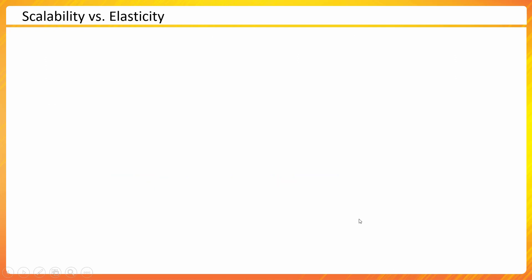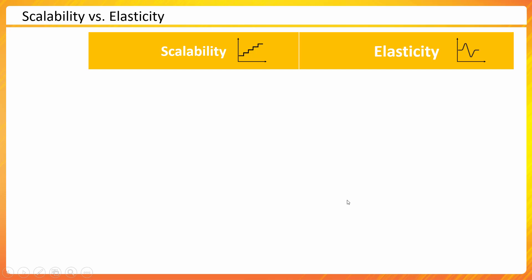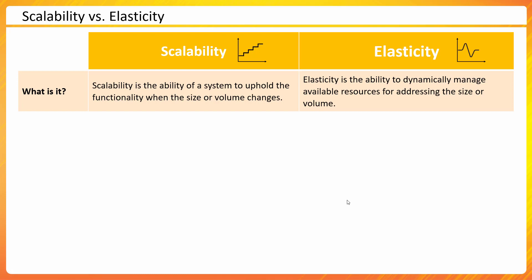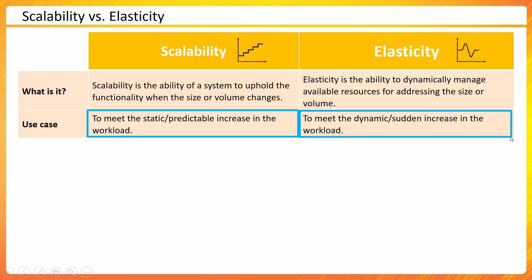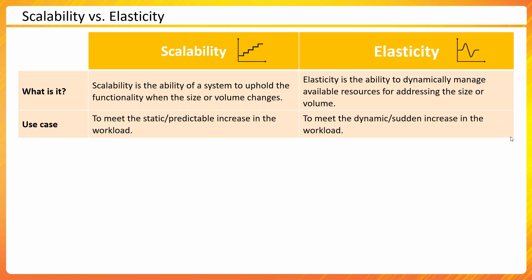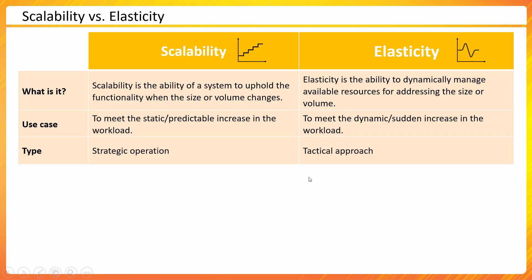In tabular format: scalability is the ability of a system to uphold functionality — stability is important here. Elasticity is about dynamically managing resources as size or volume changes. The use case for scalability is meeting static, predictable increases in workload — a lot of planning is involved. Elasticity meets dynamic, sudden increases in workload. Scalability is a strategic operation — AWS decides where to launch new regions and edge locations. Elasticity is a tactical approach, like handling Prime Day traffic.